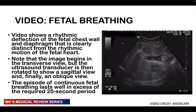The next parameter is gross body movements. A score of 2 (normal) is given if you notice two or more discrete body or limb movements within the 30-minute examination period; episodes of active continuous movement are considered as a single movement. A score of 1 (abnormal) is given if there are fewer than two episodes of body or limb movements within 30 minutes. The American College of Obstetricians and Gynecology originally stated three or more, but this has been revised to two or more discrete body or limb movements within 30 minutes.